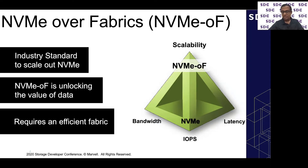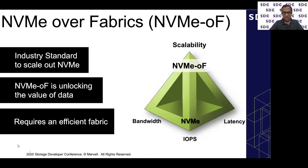NVMe over Fabrics allows you to use an industry-standard mechanism to scale out NVMe all across your data center. In order to scale the bandwidth, high IOPS, and low-latency characteristics of NVMe through a fabric, you really need a highly efficient fabric. And when I talk about efficiencies, it is not just about performance — I'll take you through a bunch of different use cases and how the value of different fabrics plays into those use cases.